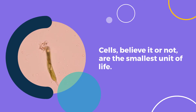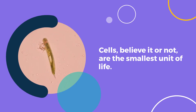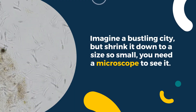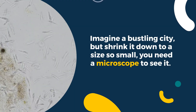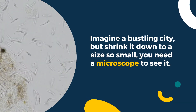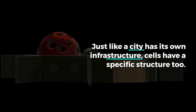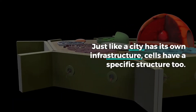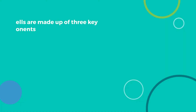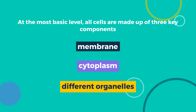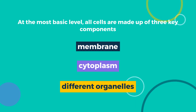Cells, believe it or not, are the smallest unit of life. Imagine a bustling city, but shrink it down to a size so small you need a microscope to see it. Just like a city has its own infrastructure, cells have a specific structure too. At the most basic level, all cells are made up of three key components: membrane, cytoplasm, and different organelles.